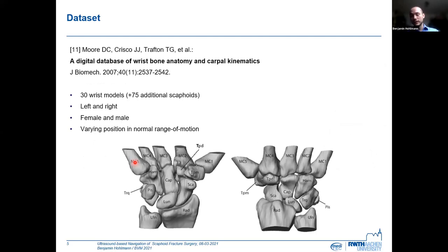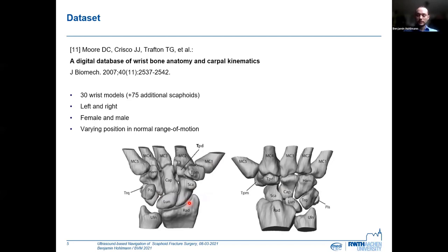I would like to thank Douglas Moore and his team, who provided us with a dataset of 105 scaphoid models and also partially full wrist models, as you can see on the bottom here. Those included left and right hands and also female and male patients.